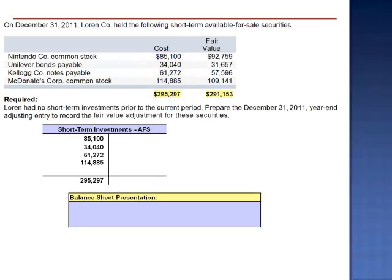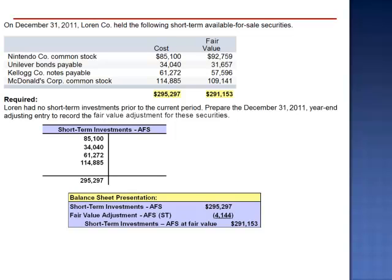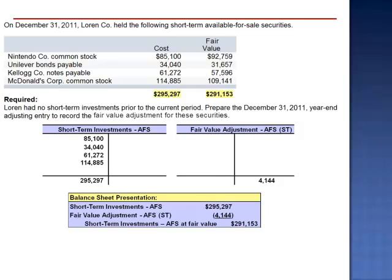On the balance sheet as of December 31, 2011, we need to report these securities at fair value. The cost of $295,297 needs to be reduced to the fair value of $291,153. To record the reduction to the value of the asset, we need a credit balance in the fair value adjustment available-for-sale short-term account of $4,144. The existing balance in the account is zero, as Lauren had no short-term investments prior to the current period. So the adjusting entry needs to credit the fair value adjustment account for $4,144.